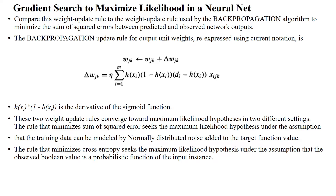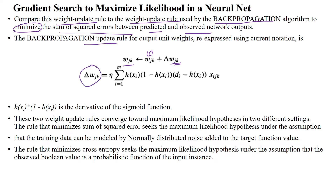We can compare this weight update rule to the weight update rule used by the backpropagation algorithm, which minimizes the sum of squared error between predicted output and actual output. Here, the weight is updated from the old weight plus the identified weight update — the weight update uses the learning rate and the error loss function, updated for all samples 1 to m, using the sigmoid weight function as the activation function.